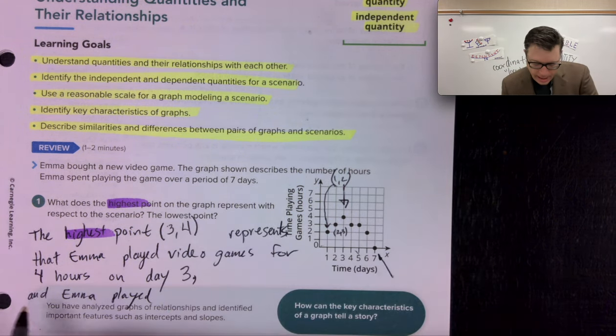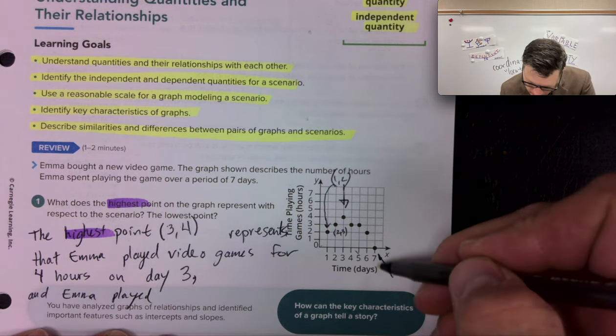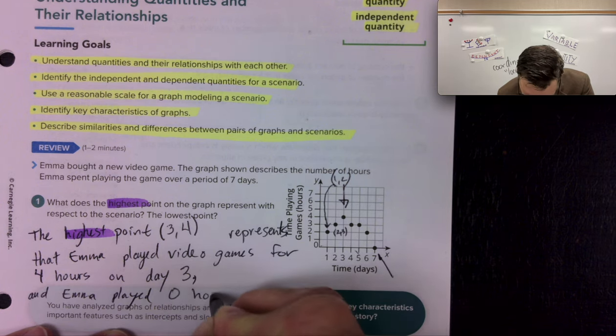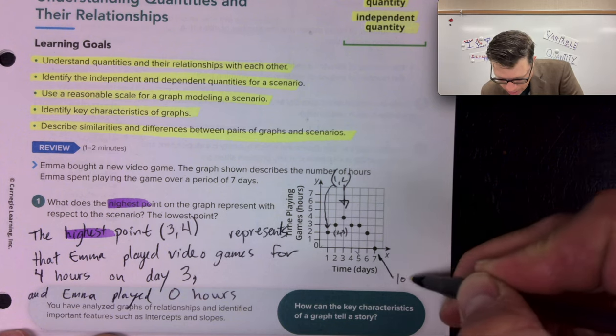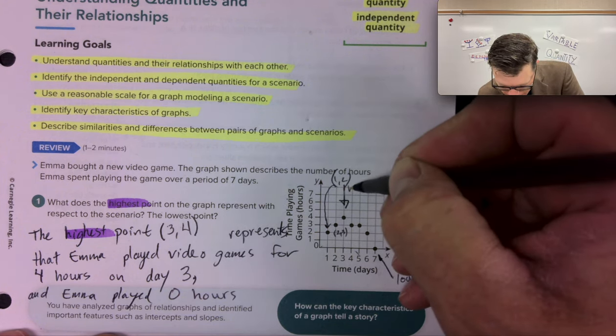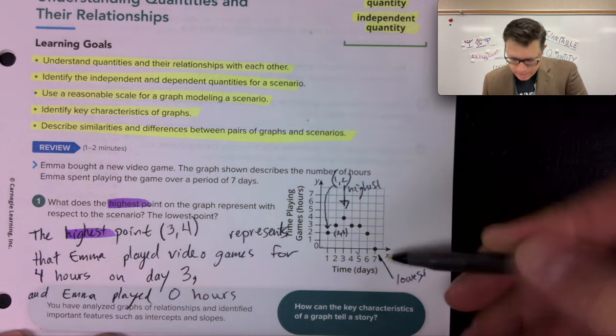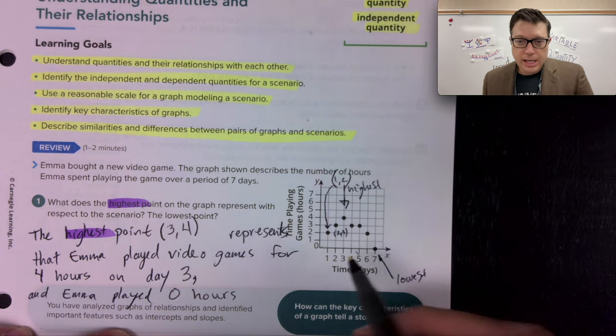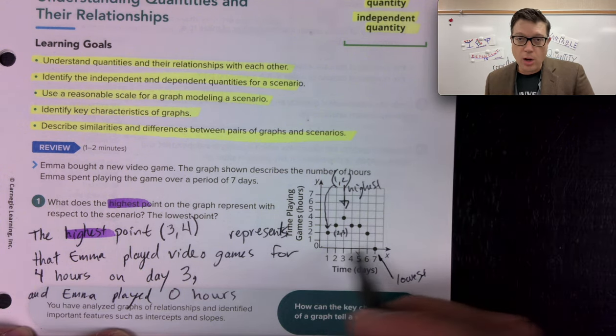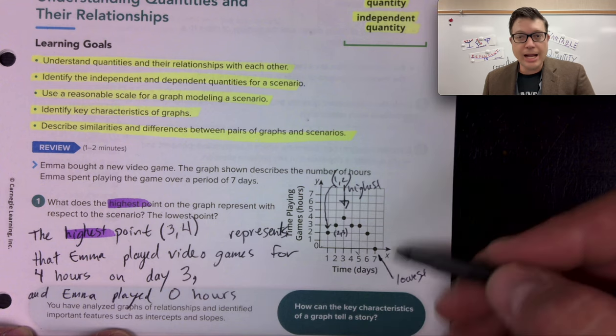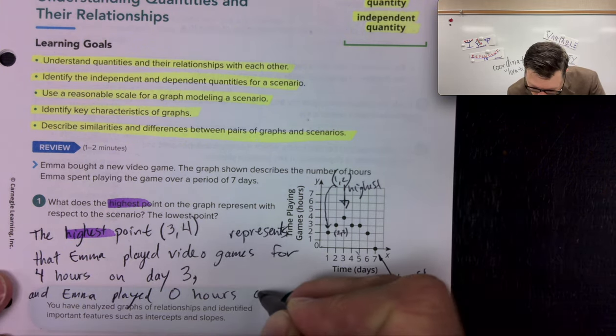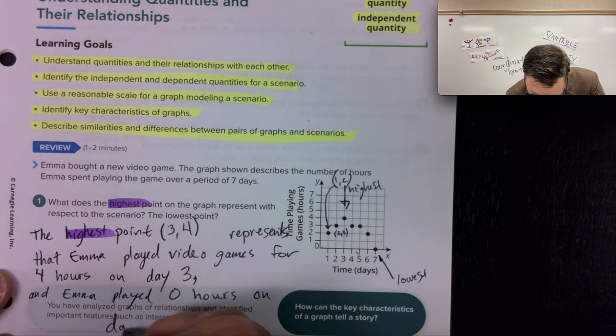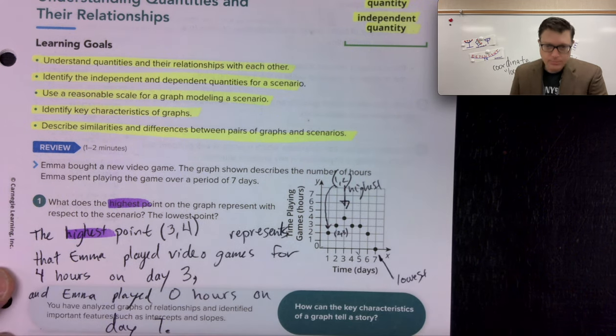Comma. And Emma played zero hours because that's that point right there. This is the lowest. This is the highest. So if it's the lowest point, it's at a level of zero in this problem. And it happened on day seven. Emma played zero hours on day seven.